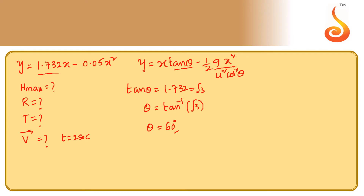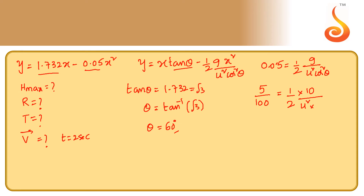Once we calculate θ, let us also calculate the initial velocity from this equation. So 0.05 = g/(2u²cos²θ). Substituting θ = 60°, cos 60° = 1/2, so cos²60° = 1/4. This gives 1/10 = 40/u², therefore u² = 400, so u = 20 meters per second.